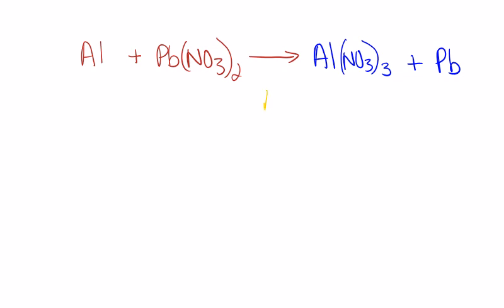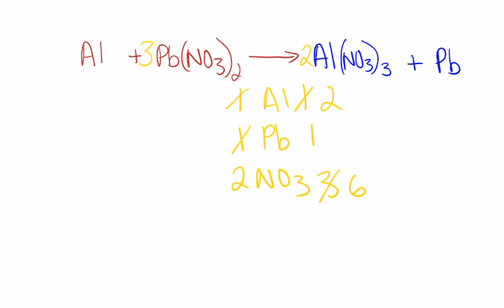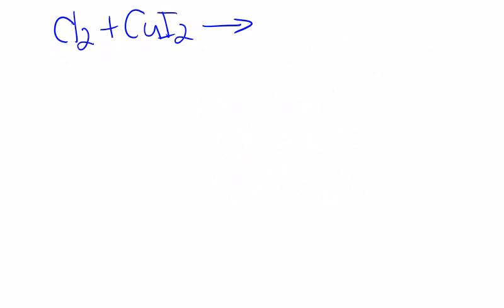We always need to balance our equations. We've got Al, Pb, and NO3. We have 1 and 1, 1 and 1, 2 and 3 respectively. We need to get our nitrates up to 6 by placing a 2 here and a 3 here. You can see that our nitrates are at 6, but that unbalanced everything else, so we need to place a 2 in front of aluminum and a 3 in front of lead. Our balanced coefficients are 2, 3, 2, 3.